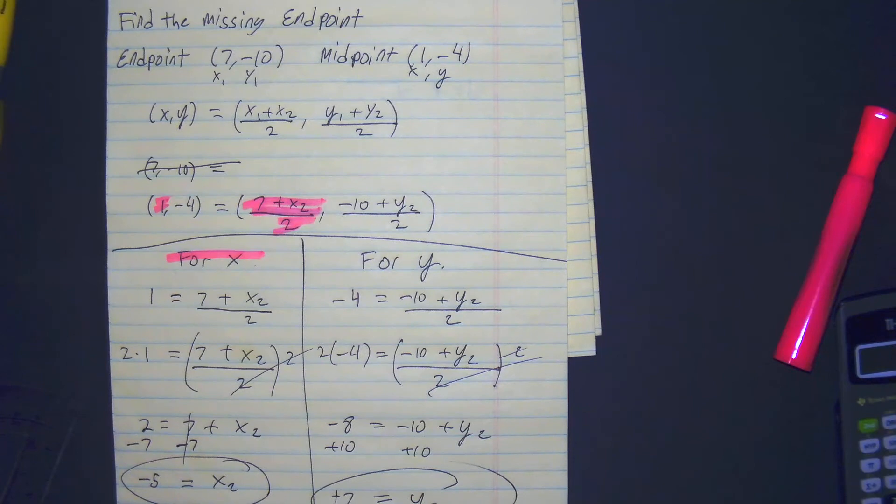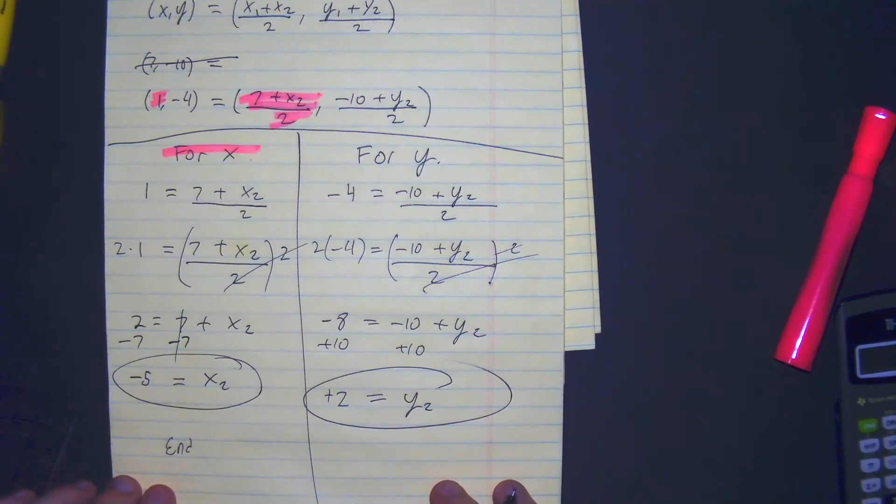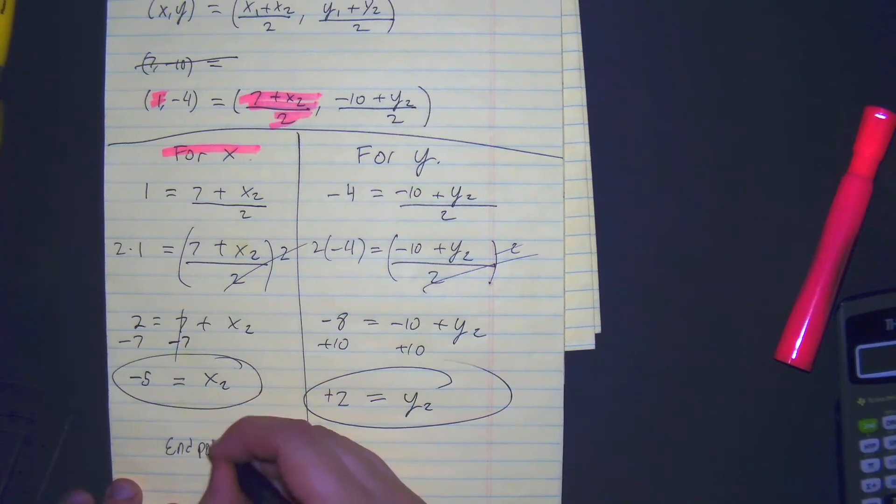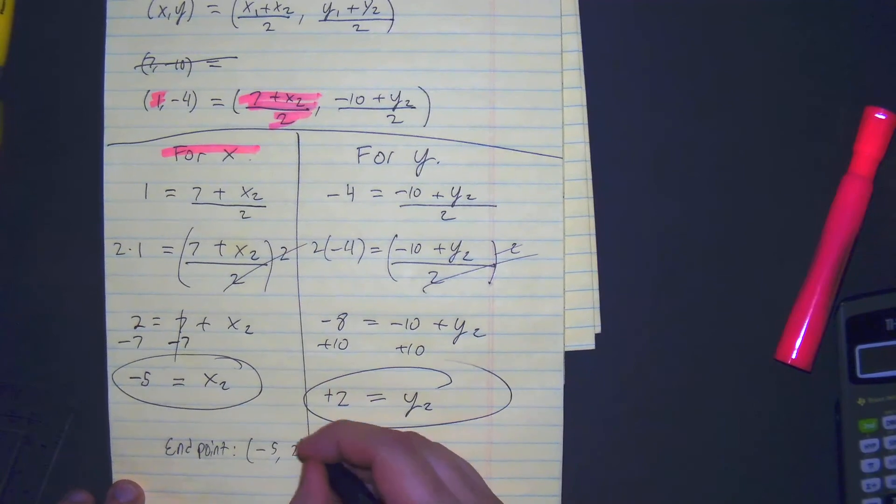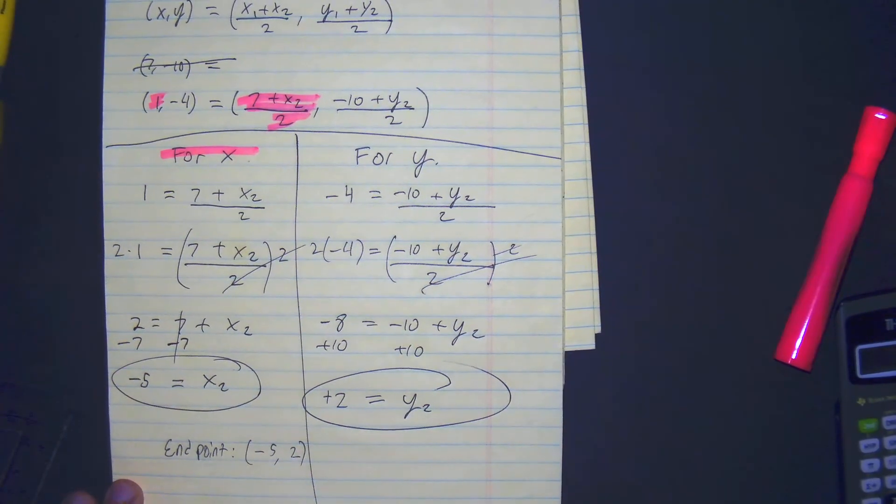So our final answer of the endpoint that's missing would be at negative 5, 2. Negative 5, 2. All right, and that's it. Thank you very much.